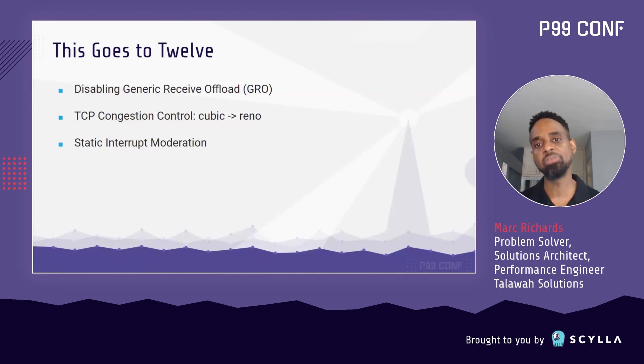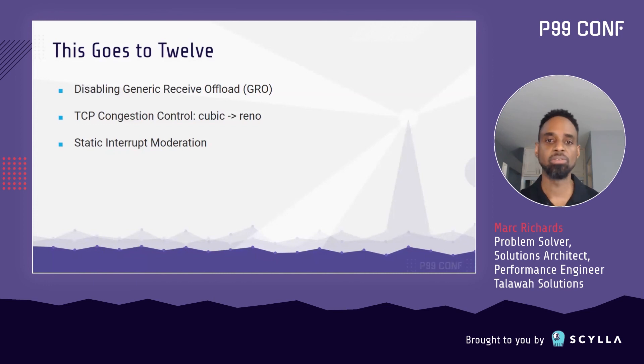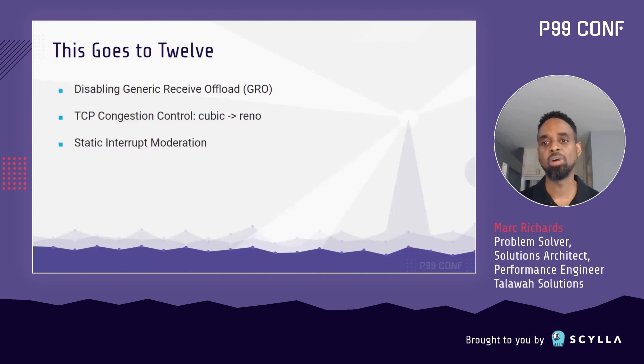Finally, while adaptive interrupt moderation is extremely powerful and versatile, it still adds a tiny bit of overhead. So using a relatively high static value gives us a small performance bump.